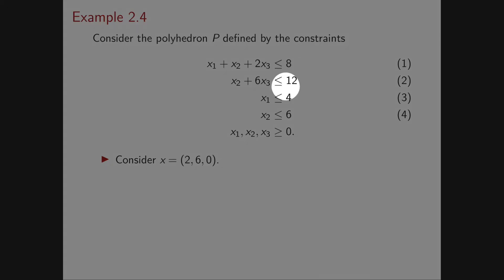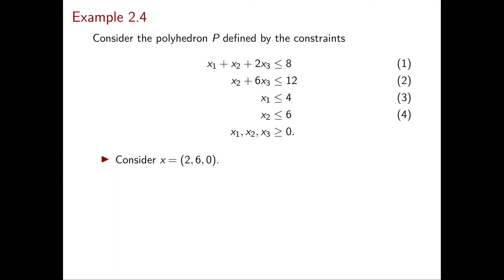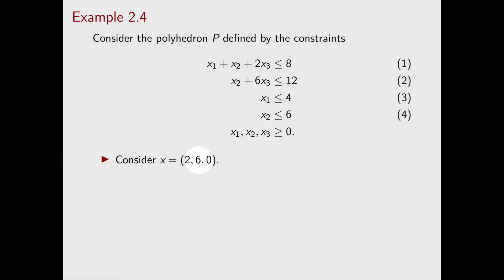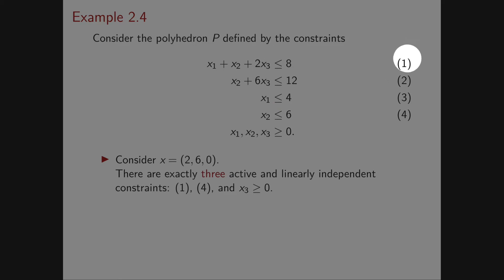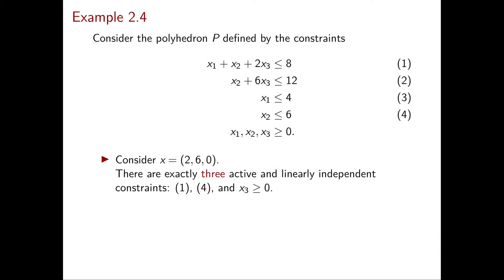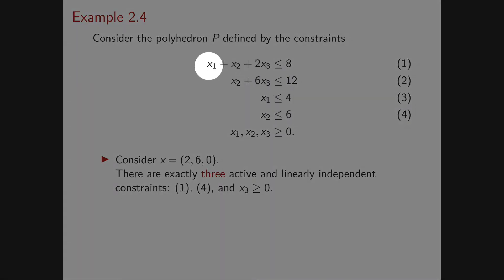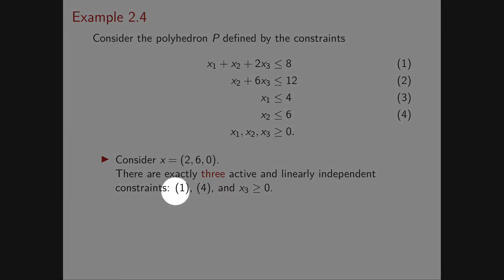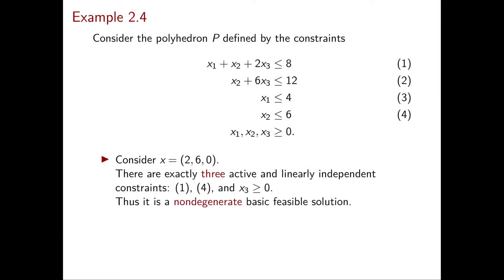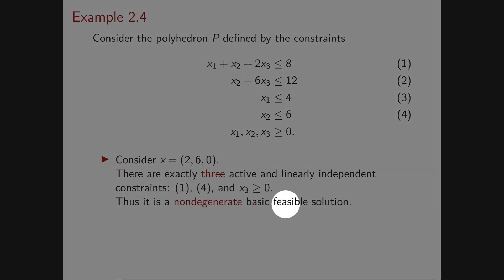Let's consider the polyhedron P defined by this system and the vector (2, 6, 0). This polyhedron is in dimension 3 because we have exactly three variables. You can check that at this vector there are exactly three active constraints: 1, 4, and x3 ≥ 0. For example, for the first: 2 + 6 + 0 = 8, so constraint 1 is active at x. You can also check that these three constraints are linearly independent. Therefore, our vector x is a non-degenerate basic feasible solution.